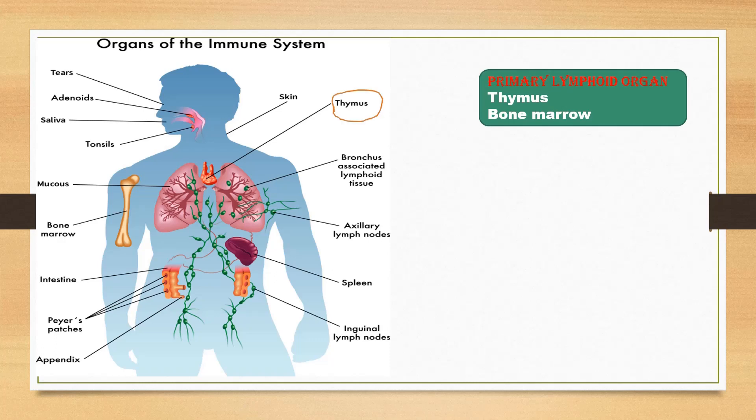Primary lymphoid organs are thymus and bone marrow. They form lymphocytes. Lymphocytes in primary lymphoid organs are inactive as they do not come in contact with antigen.